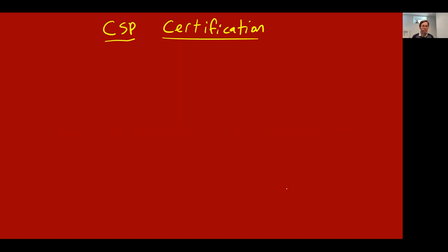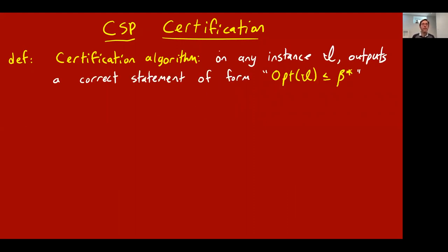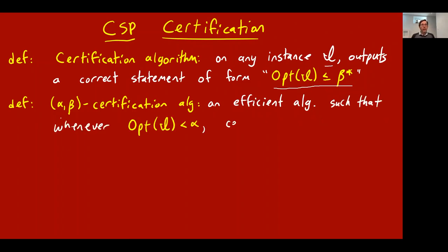Now I'll talk about the third task: the certification task. A certification algorithm for a kind of CSP is any algorithm that, given an instance i, outputs a correct statement of the form 'optimum of i is at most beta-star' — i.e., it outputs a number beta-star guaranteed to be an upper bound on the optimum value. Ideally beta-star should be as small as possible. We say a CSP certification algorithm is an alpha-beta certification algorithm if whenever the optimum value is less than alpha, the certificate the algorithm outputs will be less than beta.